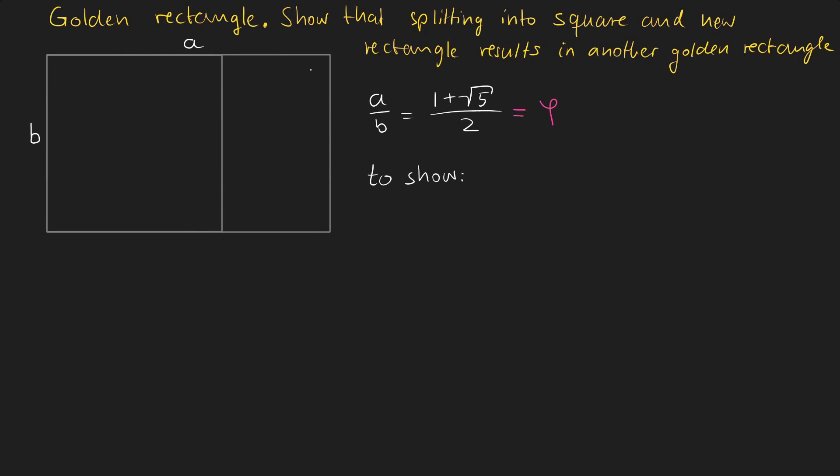But what do we actually need to show? Well we have this new rectangle here and we need to show that the ratio from its width to its height is also the golden ratio. So we need to show that if we divide the width by the height we also get the golden ratio.